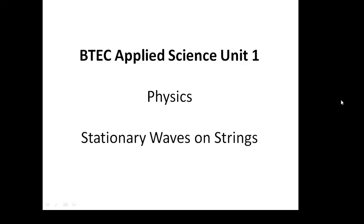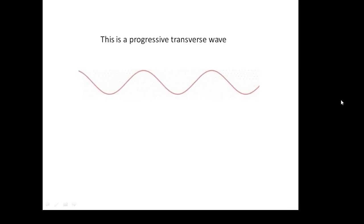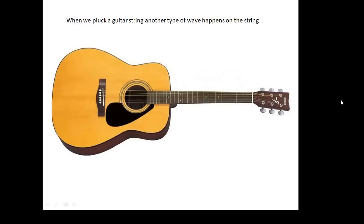BTEC applied science unit 1 physics — this video is about stationary waves on strings, like on a guitar string. These are transverse stationary waves. There is another kind, longitudinal stationary waves, but we'll cover those later. This is different from a progressive wave. So far the waves we've looked at, like water waves and electromagnetic waves, have been progressive — they travel from one place to another. When we pluck a guitar string we get a stationary wave, because it doesn't go anywhere; the string vibrates and the wave stays on the string.